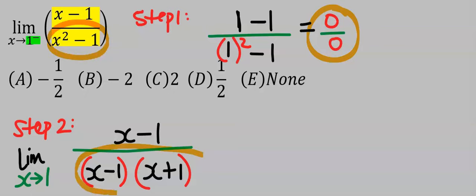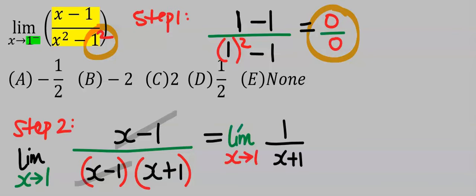We have done this here. We can do this because one is the same thing as one squared. Now, taking the limit of the remaining function, you get one over two.